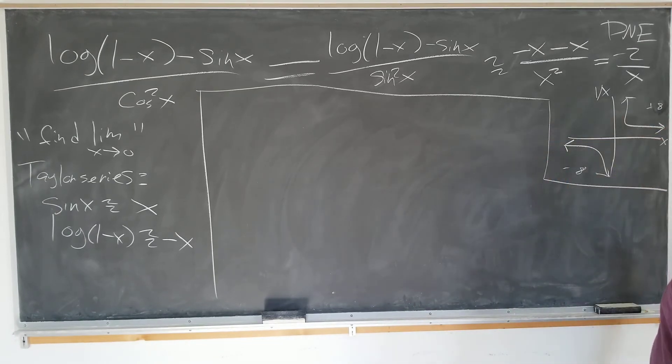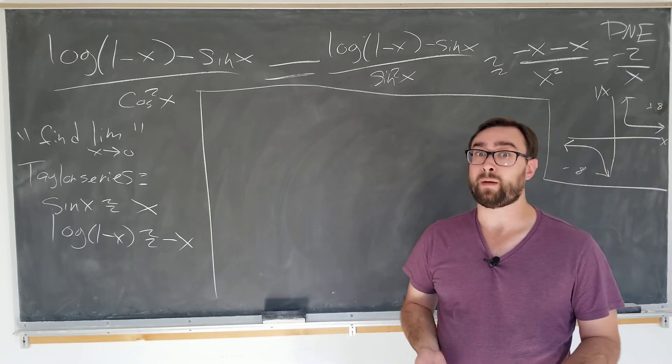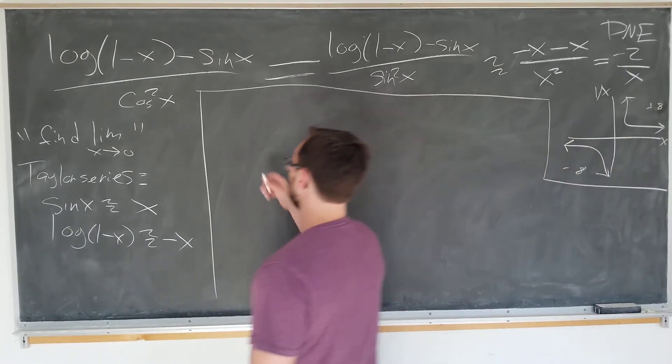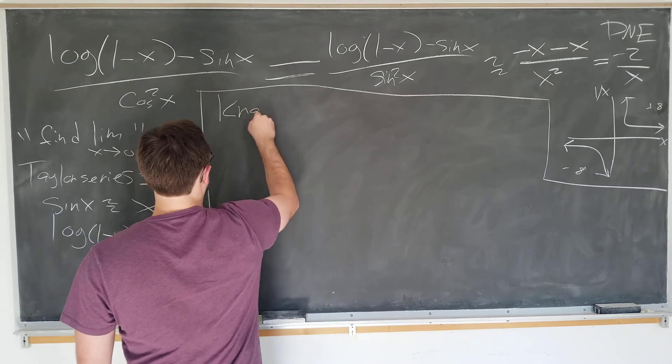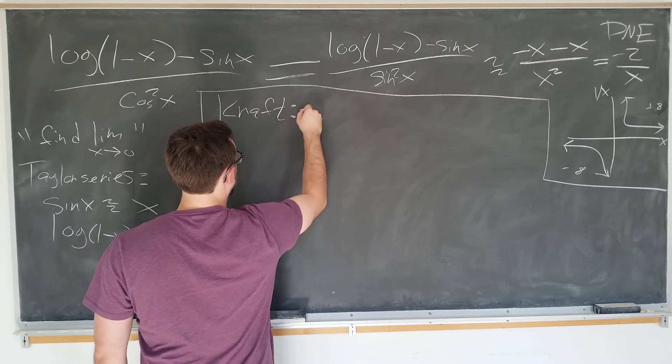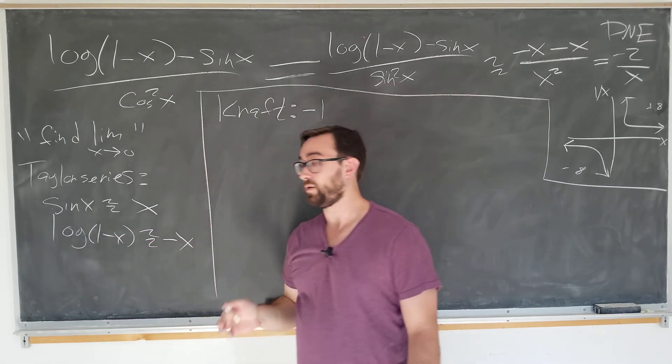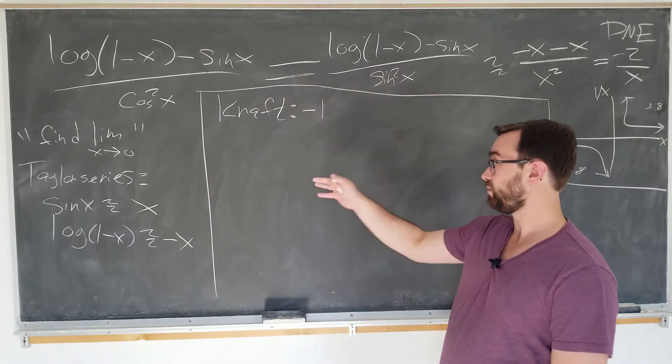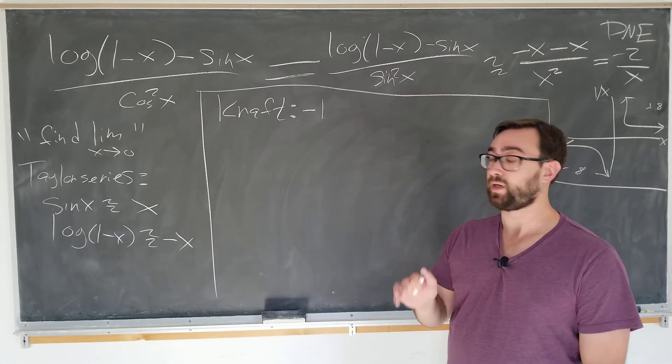Kraft says it's negative 1. Okay, so I think Katie used this method because she's really smart and she recognized all the Taylor series expansions right away.